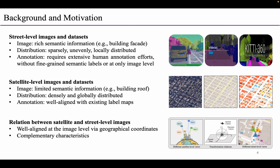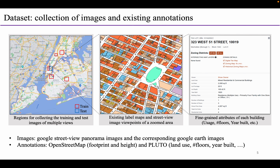As shown in the left figure, we select six regions in New York City for collecting the training and test samples of our Omnicity, and we collect the Google Street View panorama and the corresponding Google Earth images from these regions. For the annotation data collection, we combine the meta-information from OpenStreetMap and the Pluto data provided by the government. OpenStreetMap contains building footprints and height information, while Pluto data provides land use, number of floors, year built, and other useful information for each building.